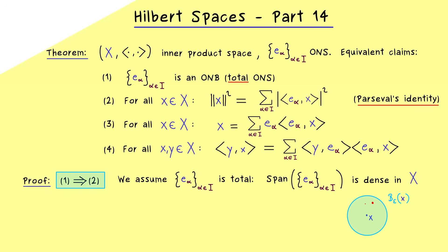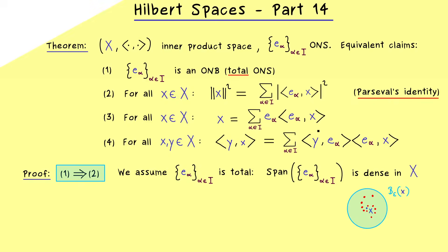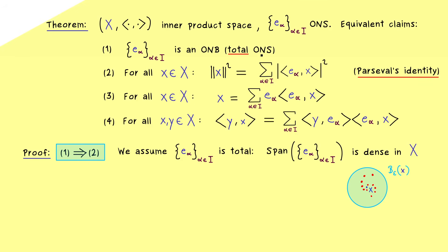In other words, you can be as close as you want with the span to the given point x. This property is needed if we want to talk about the limit process given in part 3. But before we do that, let's first do the calculation to get Parseval's identity. For that, let's fix our x in the inner product space and also epsilon greater than 0 — both things are arbitrarily chosen, so the proof is completely general.